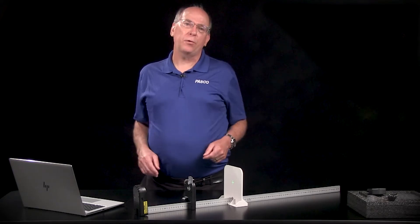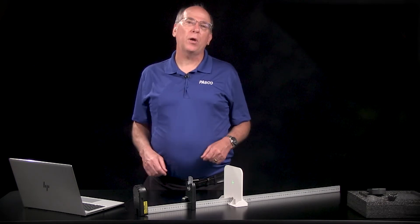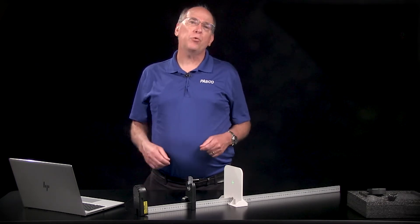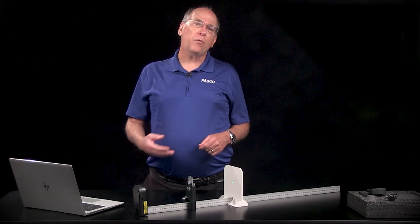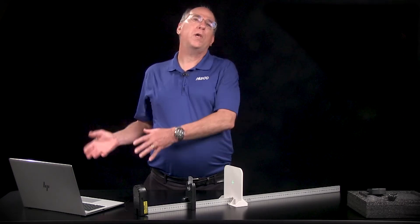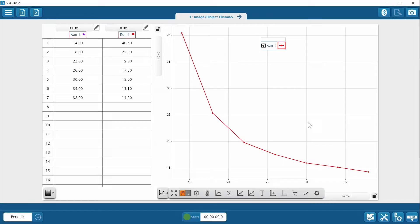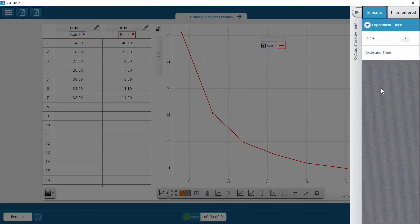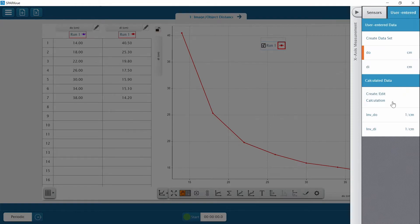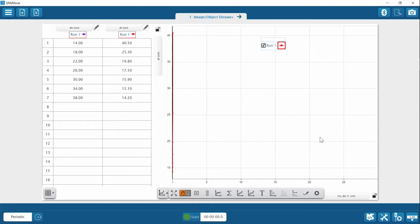Students can quickly manipulate their data to find a linear relationship. After some trial and error, they find that graphing the inverse of the image distance versus the inverse of the object distance yields a straight line. Let's graph versus the inverse of the object distance.